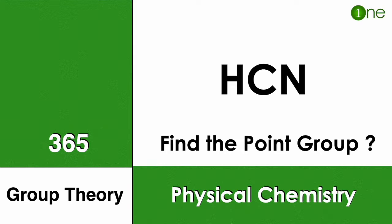Welcome to One Chemistry. This is the 365 chemistry series, physical chemistry questions for you. Here HCN is given, which is hydrogen cyanide. You've got to find the point group of the molecule by group theory.